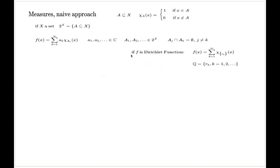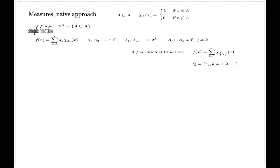Inspired by the example of the Dirichlet function, let's look at functions which are sums of indicator functions. These have a name — they are called simple functions. Let's first try to find a replacement for Riemann integration for such simple functions that will have nice properties.